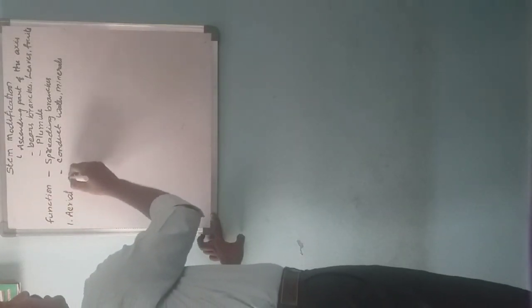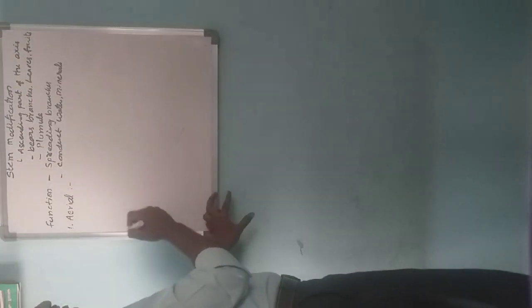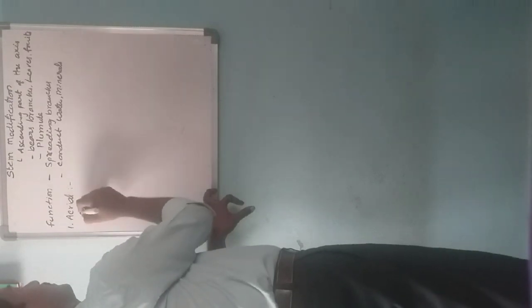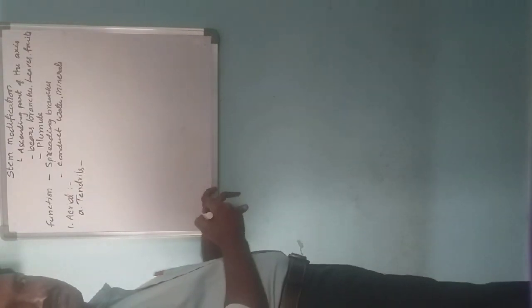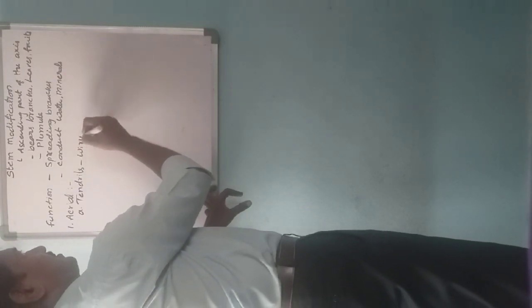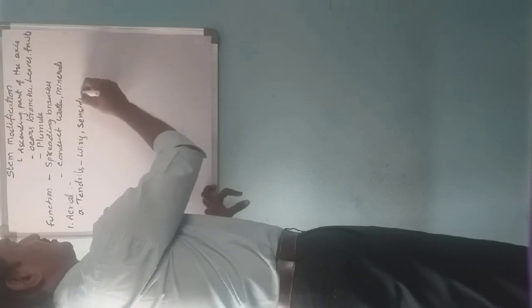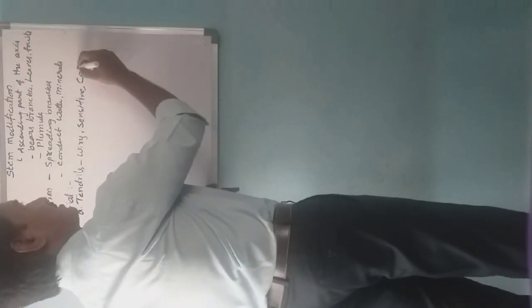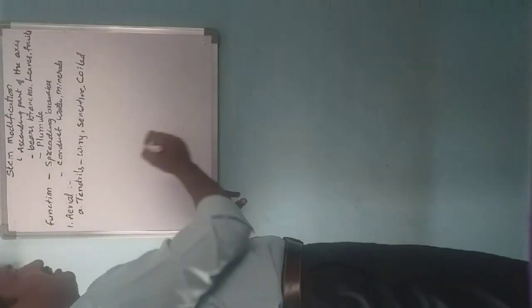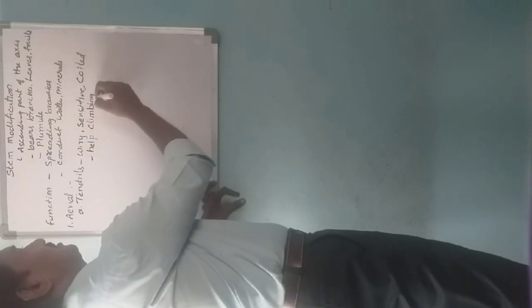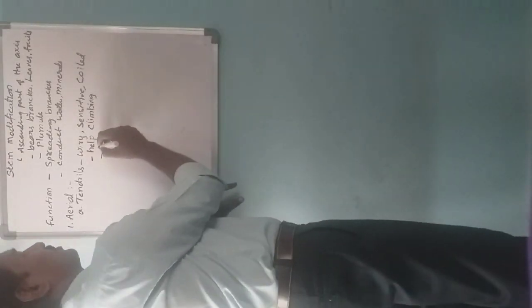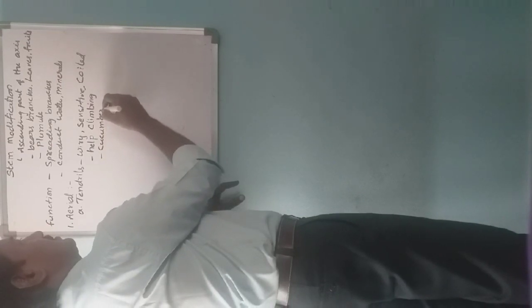Stem modifications are of three types. The first type is aerial stem modifications. Number one is tendrils. Tendrils are wiry, sensitive, and coiled structures. The function of tendrils is to help the plant in climbing. Examples of tendrils are cucumber and pumpkin.